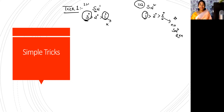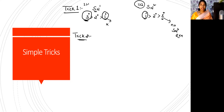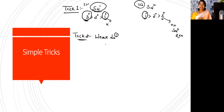Trick number two is what kind of nucleophile it is — whether it is a strong nucleophile or a weak nucleophile. Weak nucleophile favors SN1 and strong nucleophile favors SN2. Weak nucleophile favors SN1 reaction and strong nucleophile favors SN2 reaction.